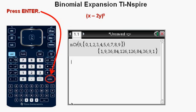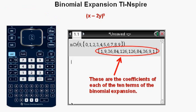Press enter. These 10 numbers calculated, separated by commas, are the coefficients of the terms in this binomial expansion.